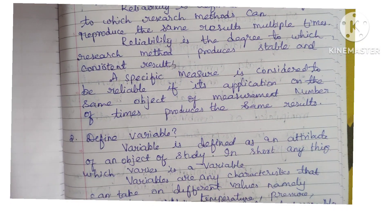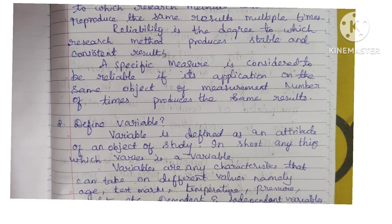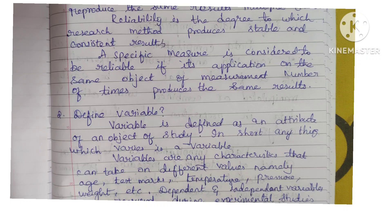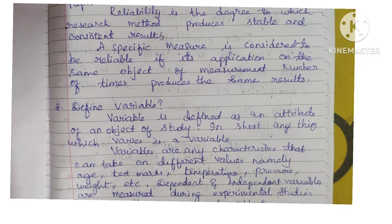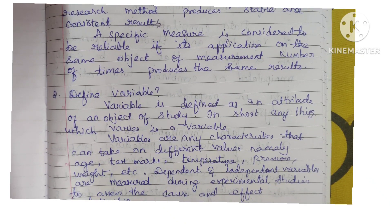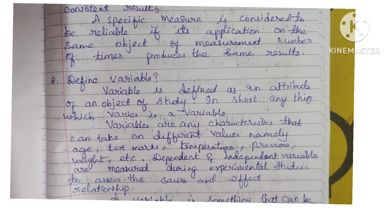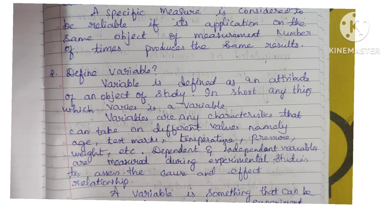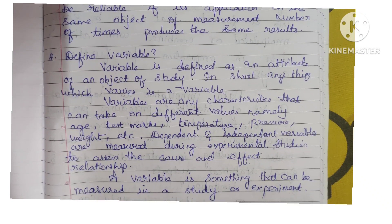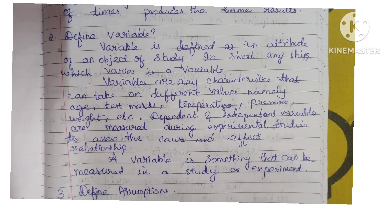Second question: define variable. Variable is defined as an attribute of an object of study. In short, anything which varies is called a variable. Variables are any characteristics that can take on different values, namely age, test marks, temperature, pressure, weight, etc. Dependent and independent variables are measured during experimental studies to assess the cause and effect relationship. A variable is something that can be measured in a study or experiment.